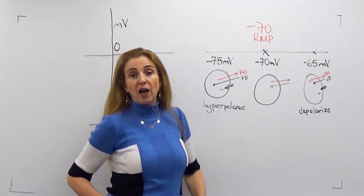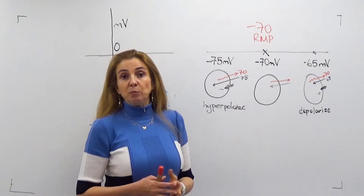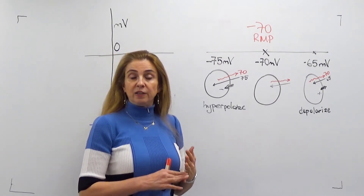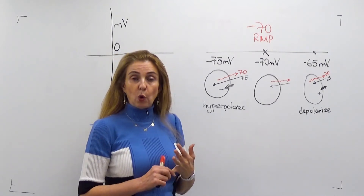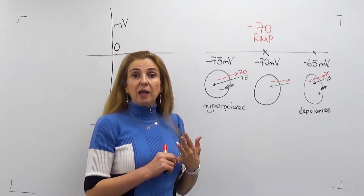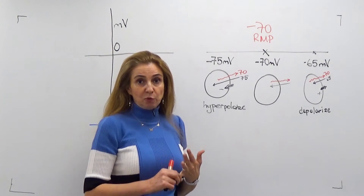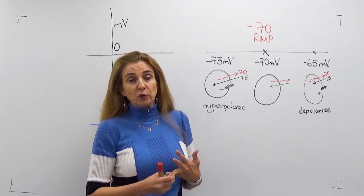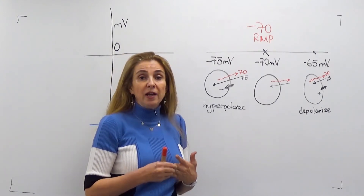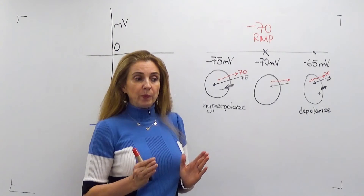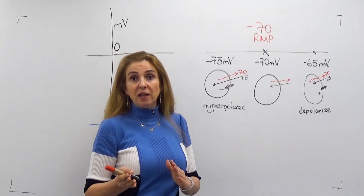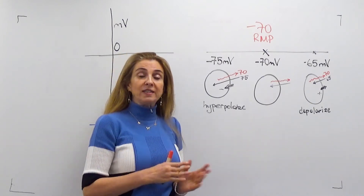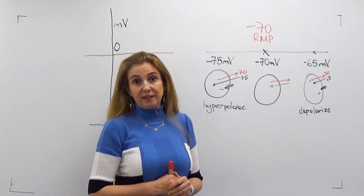To summarize the effects of ions on membrane potential: if extra channels — such as ligand-gated or mechanically-gated sodium channels — open, sodium moves into the cell and depolarizes it. If ligand-gated channels for potassium or chloride open, potassium moves out hyperpolarizing the cell, or chloride moves in, again hyperpolarizing it.